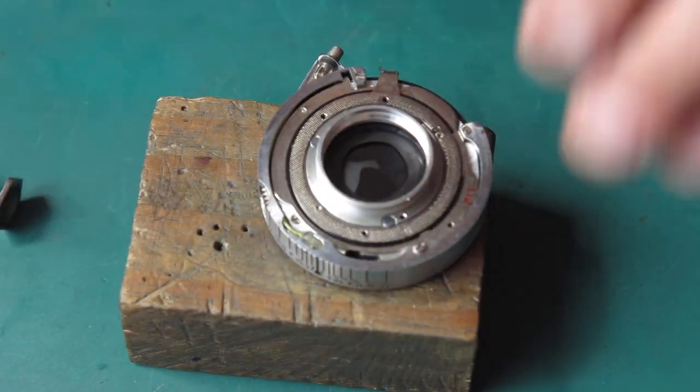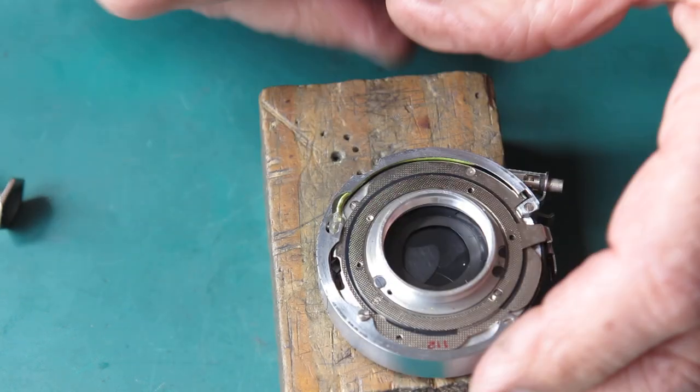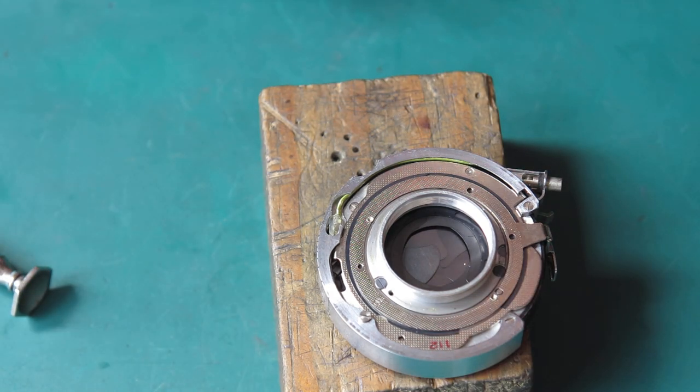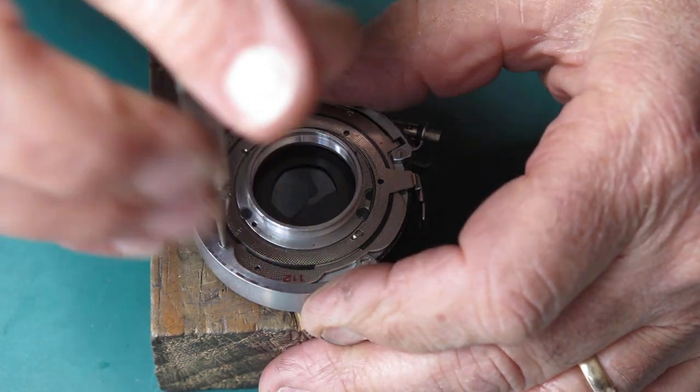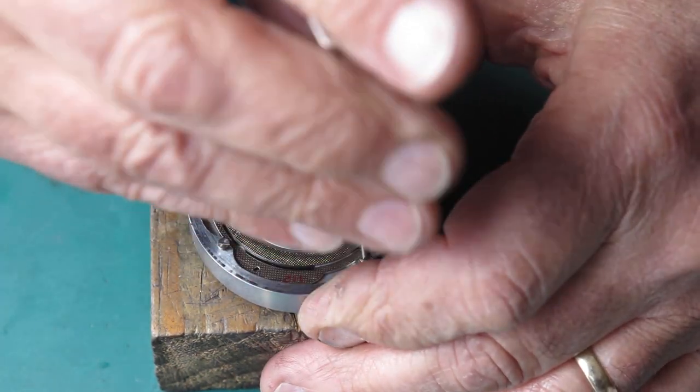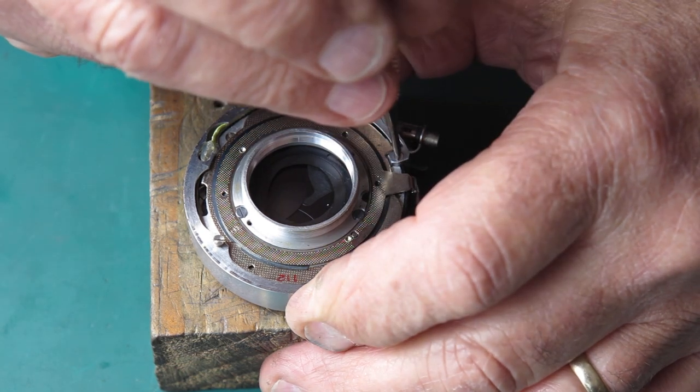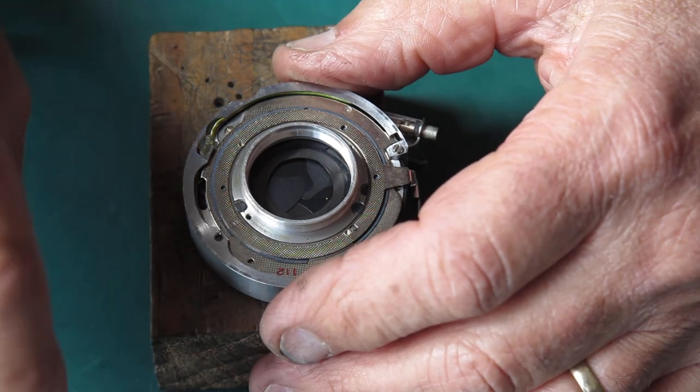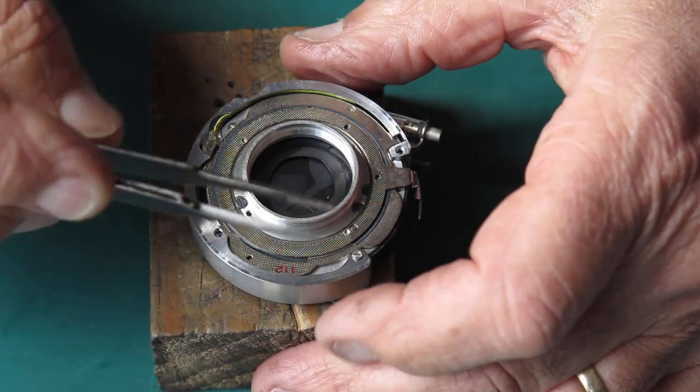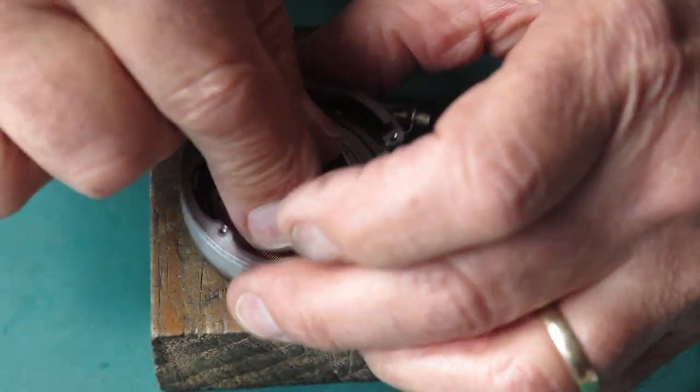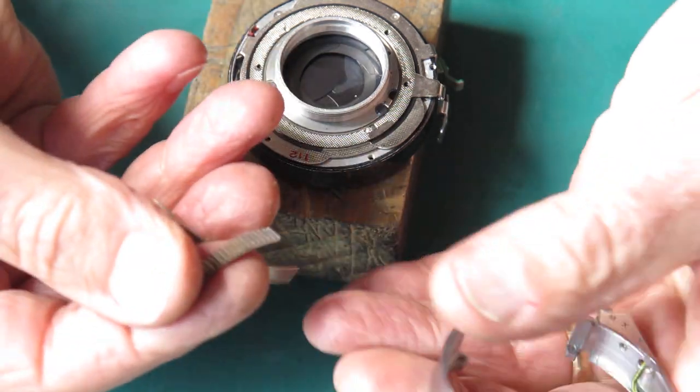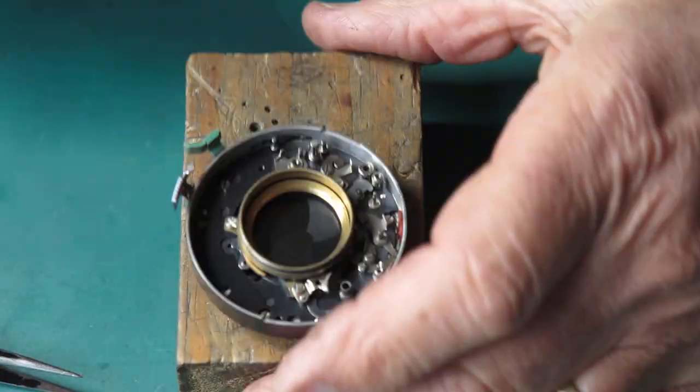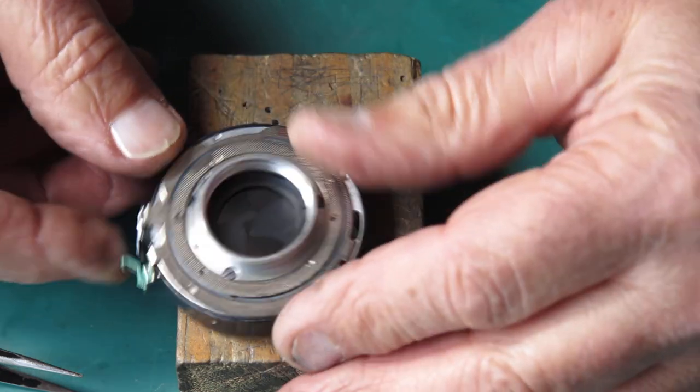First I need the outer case off, so I'll loosen up this little clamp screw here for the flash contact, which somebody's gone overboard on. Remove the three screws that hold the outer case to the shutter case. Slide the case off, we've got our curved rack and there's a curved pusher that the rack moves, and that in turn pushes on the internal cocking rack of the shutter.